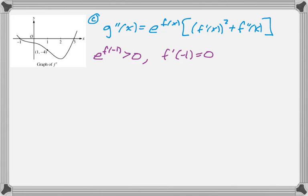So e to the f(negative 1) is going to be greater than 0. f'(negative 1) is equal to 0, which was given. And then if we look at the graph, the graph of f' at negative 1 is clearly decreasing, which means that f''(negative 1) is less than 0, since f' is decreasing.